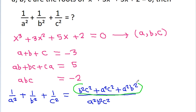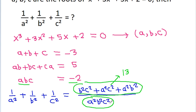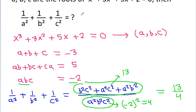So the numerator is 13. We have abc = −2, so a²b²c² = (−2)² = 4. Therefore 1/a² + 1/b² + 1/c² = 13/4.